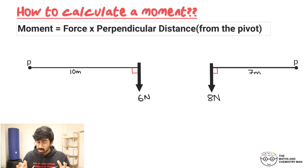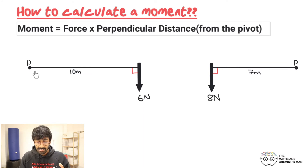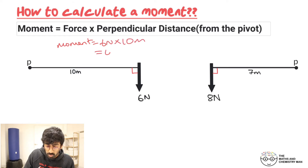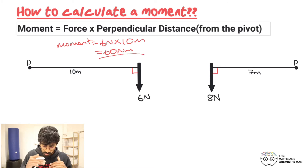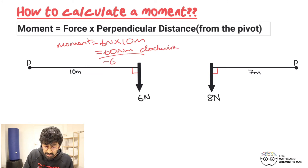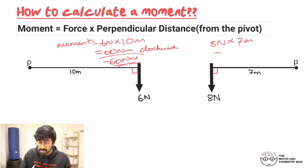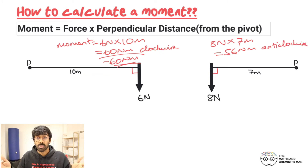Here we've got two diagrams. We need to work out the moment created by these two forces. You've got one which is 6 newtons and one which is 8 newtons. The distances from the pivot points are perpendicular: 10 meters and 7 meters. For the first one: moment equals 6 newtons times 10 meters, so 60 newton meters clockwise, or negative 60 newton meters. For the other diagram: 8 newtons times 7 meters gives 56 newton meters anti-clockwise, or positive 56 newton meters.